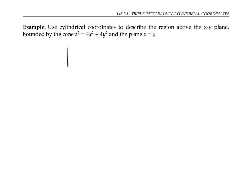Let's use cylindrical coordinates to describe the region above the xy plane that's bounded by the cone z² = 4x² + 4y² and by the plane z = 6. So that's the region inside this ice cream cone shaped figure.